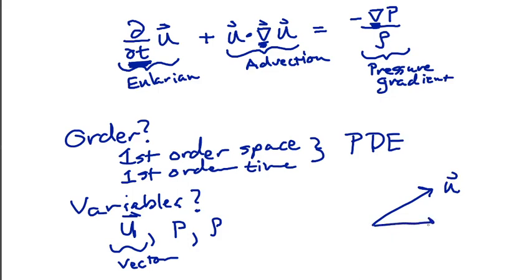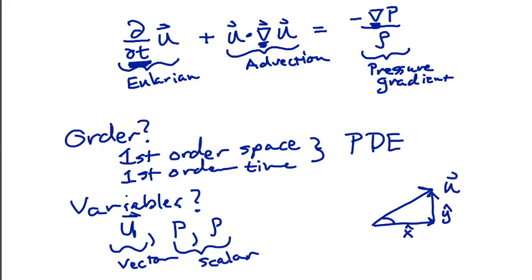We can think of a vector as being made up of a combination of orthogonal components — an x part and a y part, say, in a two-dimensional velocity. In a PDE, the vector points everywhere in space and time, and it can point in different directions at different spots. Now p and rho are a little different — these are scalars. Scalars are just numbers; they don't have a direction. We think of scalars in tensor language as a zero-rank tensor and a vector as a rank-one tensor. So p and rho are scalar variables.